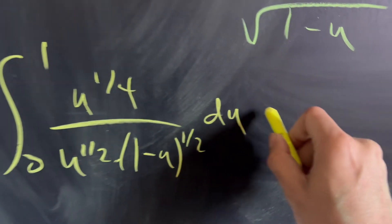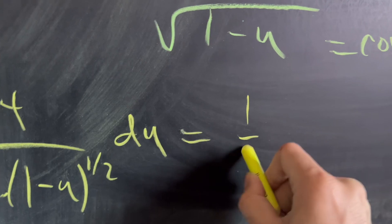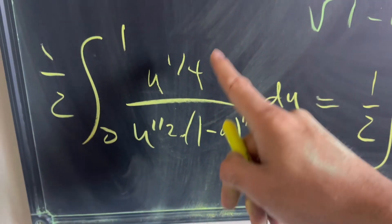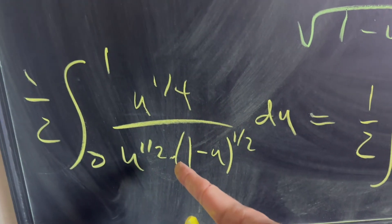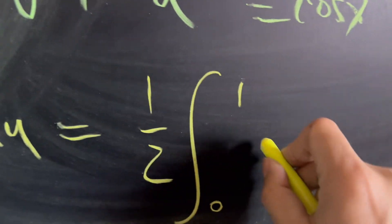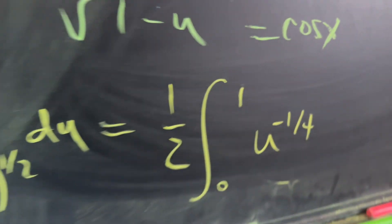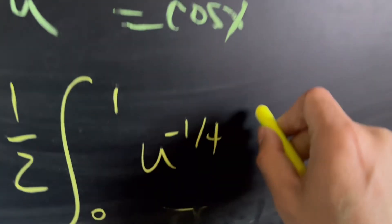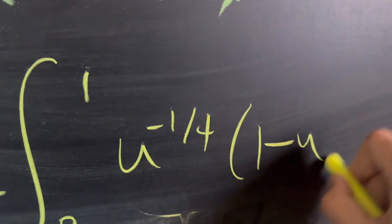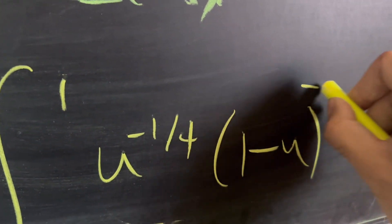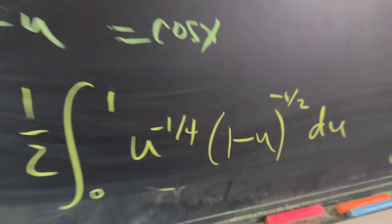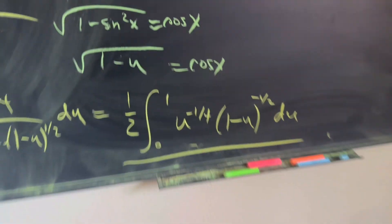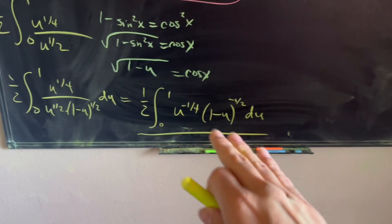Let's clean this up. We have the integral from zero to one. Combining the u exponents: one-fourth minus one-half gives u to the negative one-fourth. Bringing the cosine term to the numerator gives (1−u) to the negative one-half with respect to u.